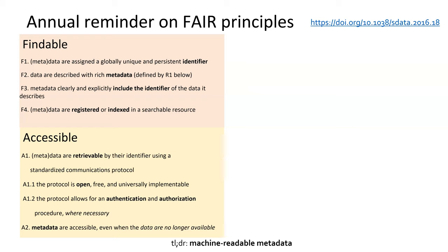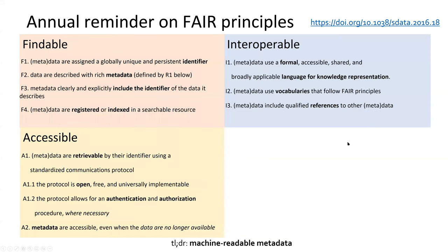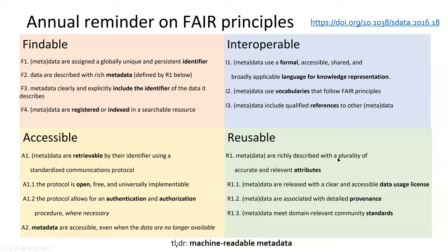You can have authentication for secure data, but even if the data is not available, metadata should stay there. For interoperability, the FAIR recommendation is to use a formal language for knowledge representation — a plain text file is not quite there — and use a vocabulary that itself follows FAIR principles, which allows reference to automated data so you can connect to the rest of scholarly knowledge. Finally, for reusability, describe metadata and data with different attributes including the license, and follow any community standards that already exist.